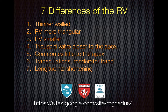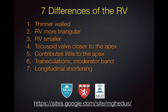It has more trabeculations, and you may see the moderator band, which isn't present in the left ventricle. And lastly, it relies on longitudinal shortening a lot more than circumferential shortening. Thanks for watching — keep checking back on our website for more tutorials and cases.